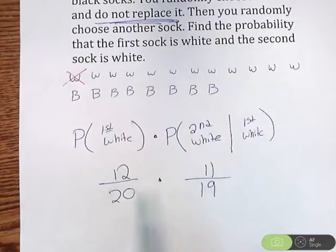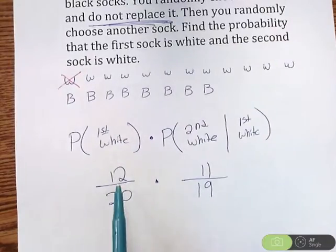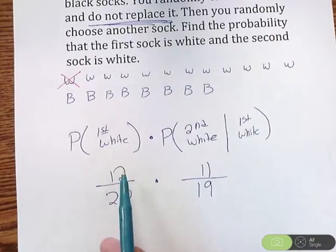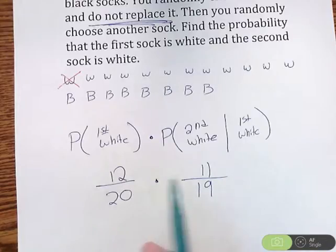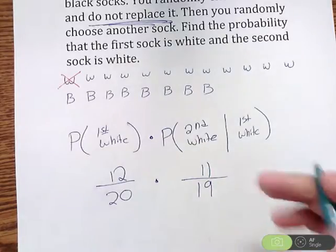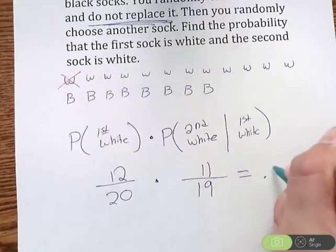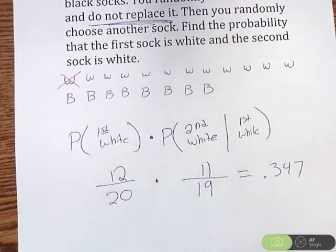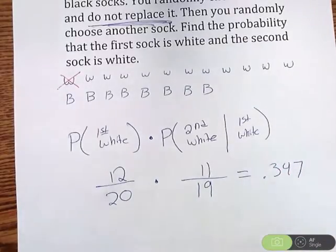Now, all I have to do is, since this says and, we've got to multiply these together. So in a calculator, you can do 12, division sign 20, multiplication 11, division sign 19. Hit enter, and you get 0.347.